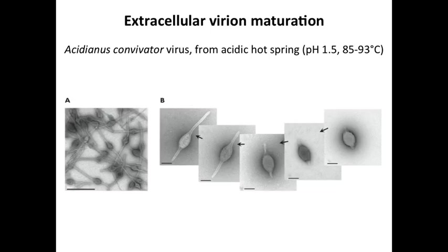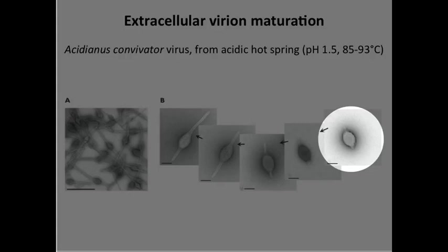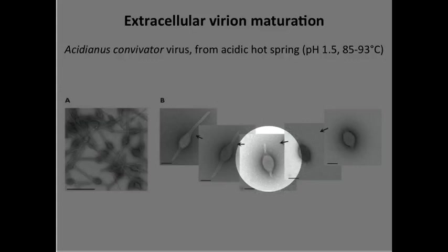The last thing I want to show is this cool virus: Acidianus convivitor virus. This is a virus of archaea — the third kingdom of life — and it was found in a hot acidic spring in Italy at pH 1.5 and 85 to 93 degrees Celsius. When mature inside the host, it has a very unusual lemon-shaped body with tails on either side. But when released from cells, it lacks tails and then matures extracellularly as those tails grow.